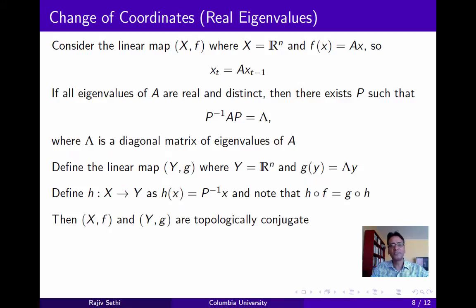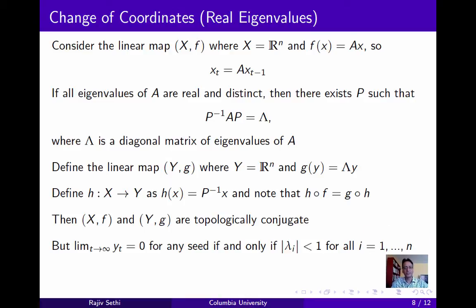The second system is extremely simple. Although it's n-dimensional, it actually consists of n separate one-dimensional systems, and the properties of these are trivial. It has a unique fixed point at the origin, and all trajectories, no matter where they start, will converge to this point in the second dynamical system (Y, g) if and only if each eigenvalue of the matrix A has absolute value less than 1.